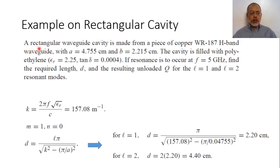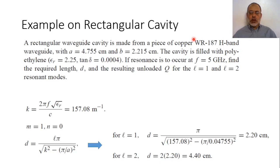we have a rectangular waveguide cavity made from copper. This means that the conductivity of the metal is the conductivity of copper. This waveguide is WR187, an H-band waveguide. WR stands for waveguide. For example, WR90 is an X-band waveguide and is a very common waveguide for microwave applications. WR187 has A equals 4.755 cm and B equals 2.215 cm.